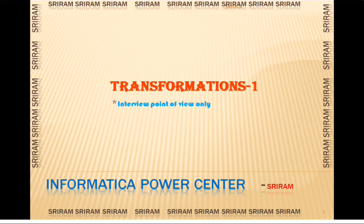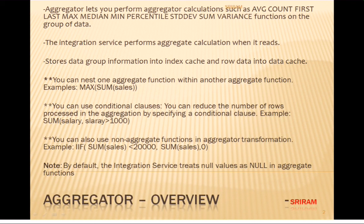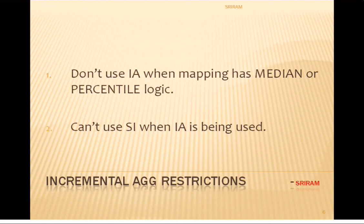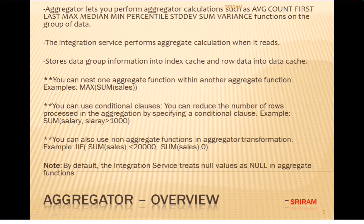The first slide covers aggregator transformation overview. The aggregator transformation lets you perform aggregate calculations such as sum, average, count, first, last, max, median, minimum, percentile, standard deviation, and variance functions on groups of data. The integration service performs aggregation as it reads and stores the necessary group information into the index cache and the row data into the data cache.